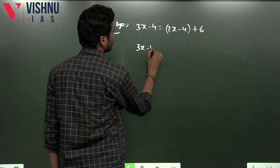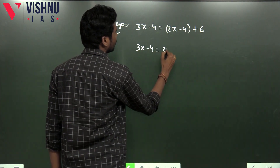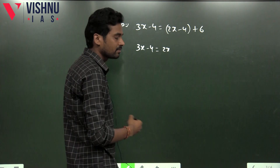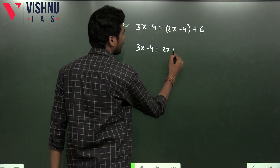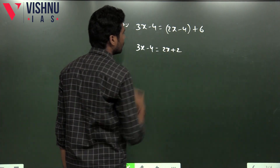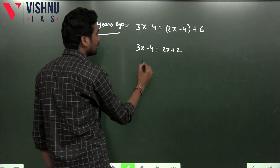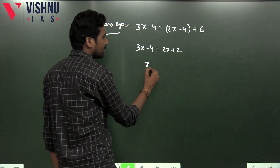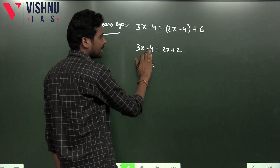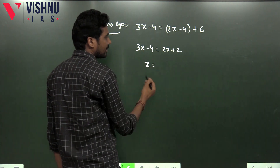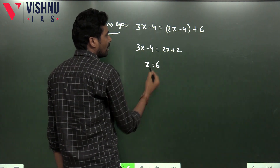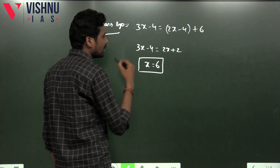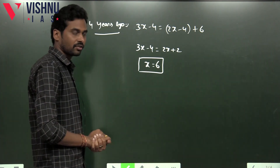The equation is simple: 3x minus 4 is equal to 2x minus 4 plus 6. So 3x minus 2x, bringing terms to one side, gives us x equals 4 plus 2, which is 6. The x value is 6.